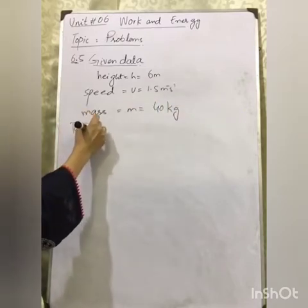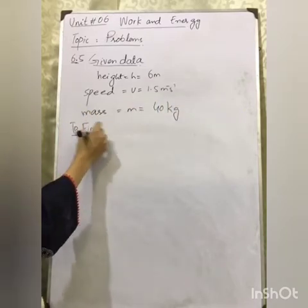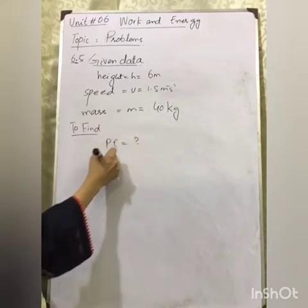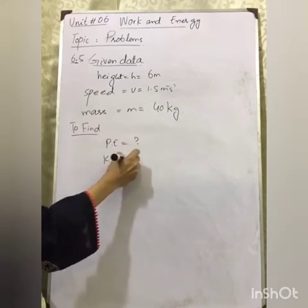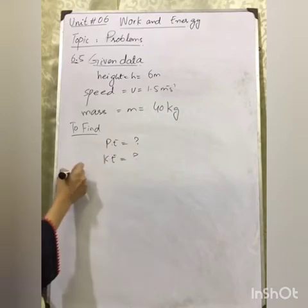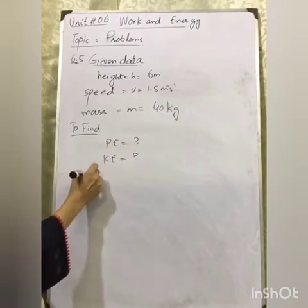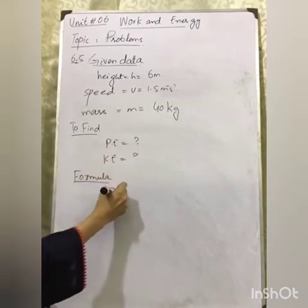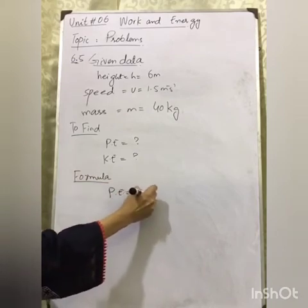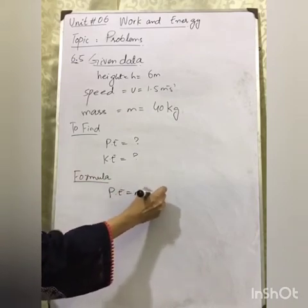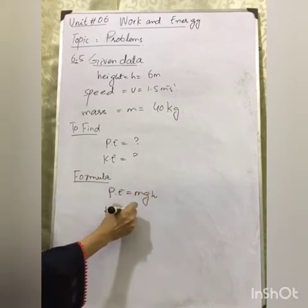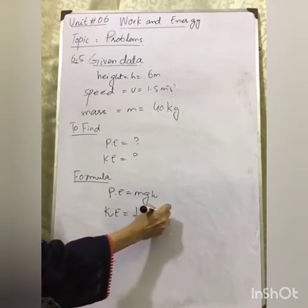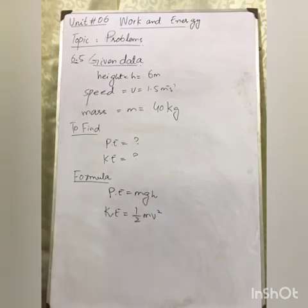To find: potential energy and kinetic energy. Formula: potential energy is equal to mgh, and kinetic energy is equal to half mv squared.